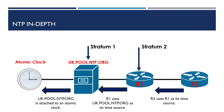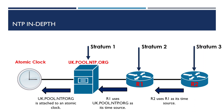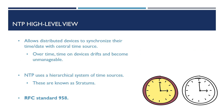R1 is classed as a stratum 2 client as it queries the uk.pool.ntp server, and R2 is classed as a stratum 3 client as it queries R1. As such, the higher the stratum number, the more accurate the server.